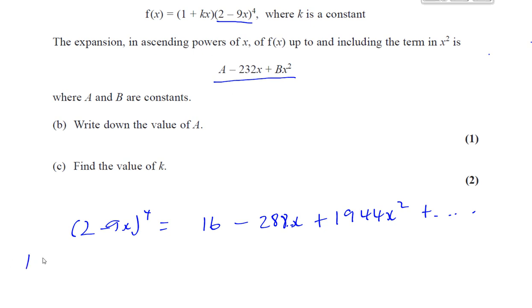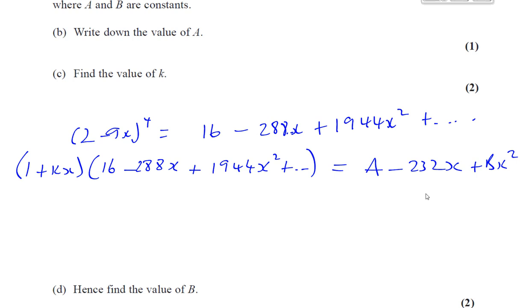Now, they've told us that when we multiply this by 1 plus kx, we're going to get that. So if we multiply 1 plus kx, multiplied by our expansion, which is 16 minus 288x plus 1,944x squared, plus, we don't need the rest of it, you're going to end up with a minus 232x plus bx squared as our first three terms in ascending powers of x up to x squared term. Of course, there's going to be more than that, but when we expand that, we're going to get x cubed term as well, but those are the first three terms up to the x squared term. That's not the complete thing, it's part of it.